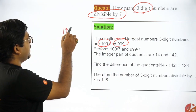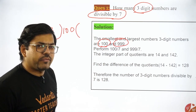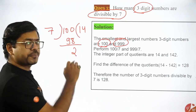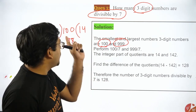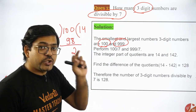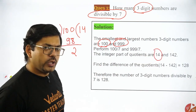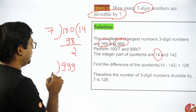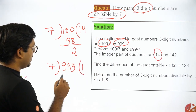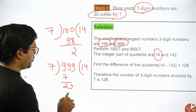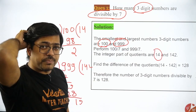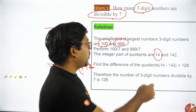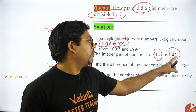Now once you divide 100 by seven — obviously it is not completely divisible — 14 sevens are 98 and 2 is the remainder. So the quotient you got when dividing 100 by 7 is 14. Now similarly divide 999 by 7. That comes out to 142 as the quotient. And now the final answer is 142 minus 14. That's it — plain and simple.